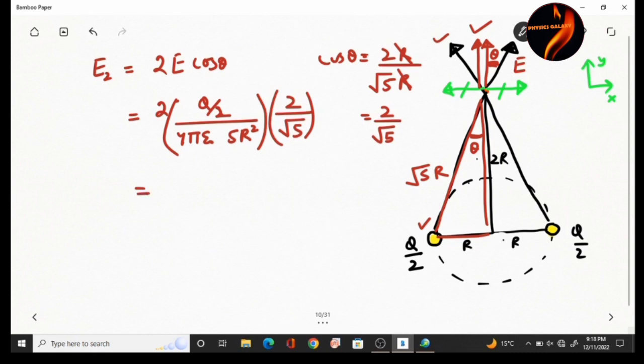The cosine of theta value is 2 by root 5. So E2, 2 cancels out, equals q divided by 4 pi epsilon 0 times 5 root 5 r squared.